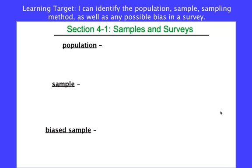We want to look at the different parts of a survey with the main purpose in mind that we want to avoid bias. Bias means it leans one way or the other, or it tries to get people to say something — it tries to get results that aren't really true. They just are results that whoever gives the survey wants to hear.